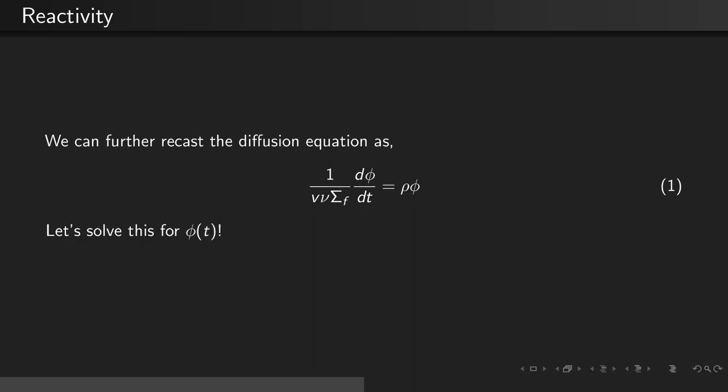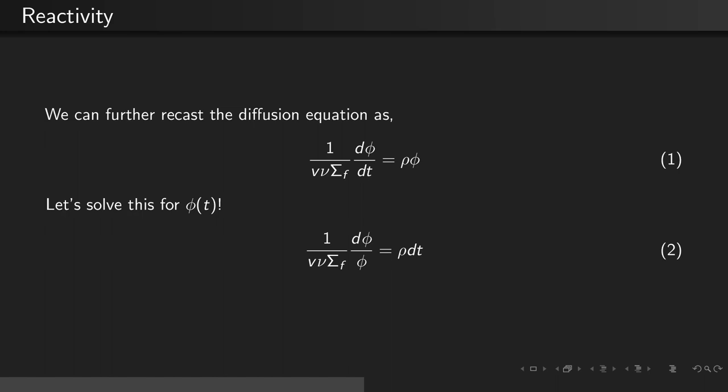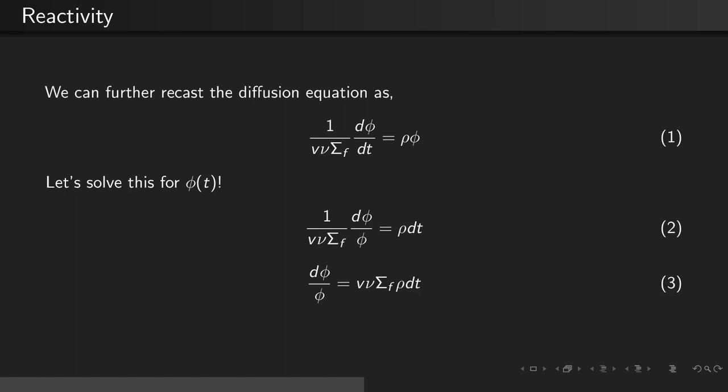Now, let's solve this equation for phi of t. To start, let's begin by dividing both sides by phi and multiplying both sides by dt. Rearranging the denominator from the left-hand side, we see that d phi divided by phi is equal to the velocity times nu sigma f times the reactivity times dt.